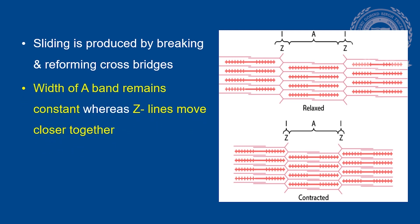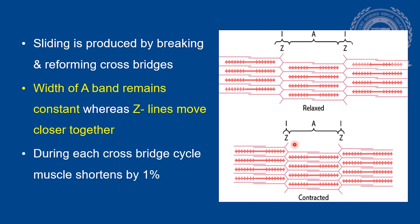The width of the A band remains the same whereas the two Z lines move closer together. During each cross-bridge cycle, the muscle shortens by 1%. The process proceeds again and again until the actin filaments pull the Z membrane up against the end of the myosin filament, or until the load on the muscle becomes too great for further pulling to occur.